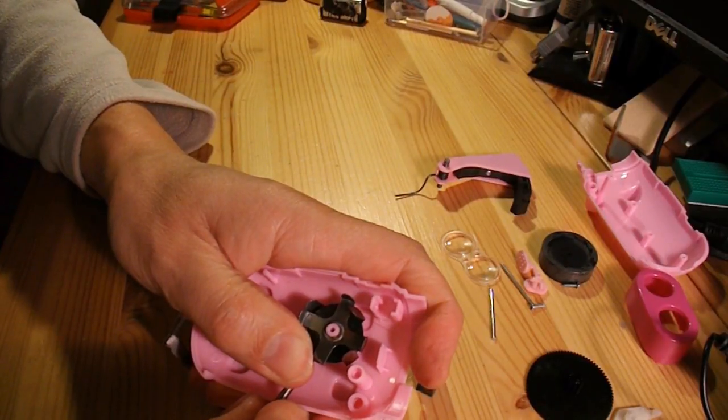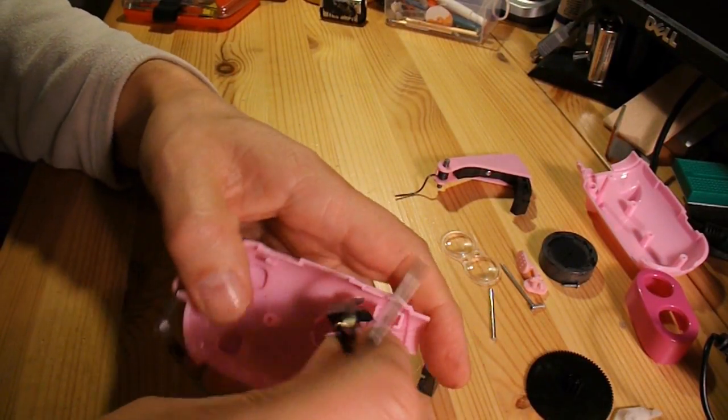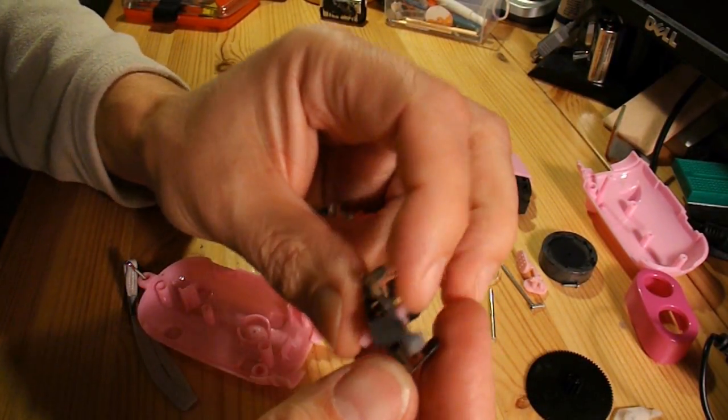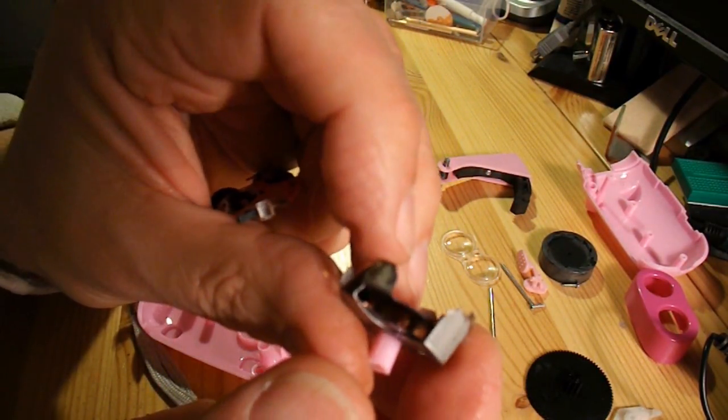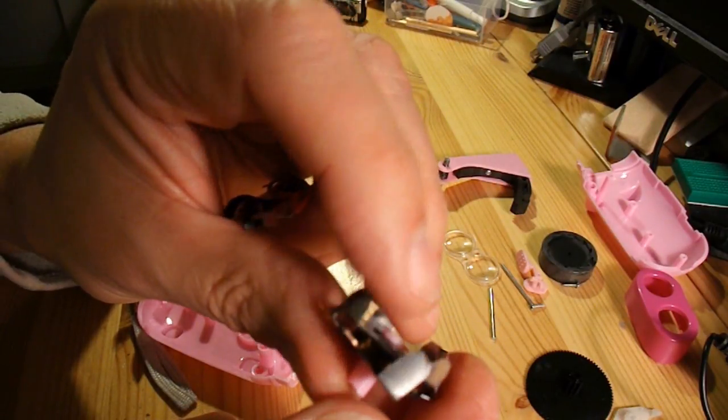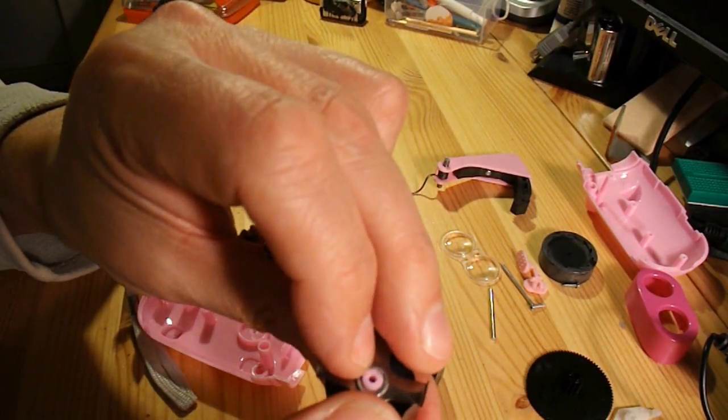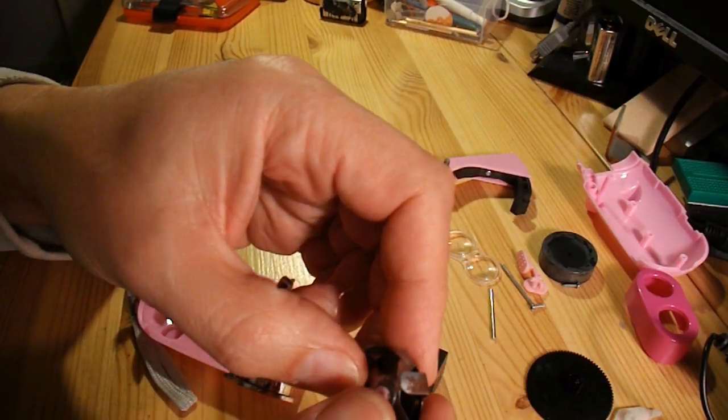It just doesn't want to come out easily. I think we might have to resort to that. Okay. So what we've got in there is a coil of wire. I should be able to use that for something.